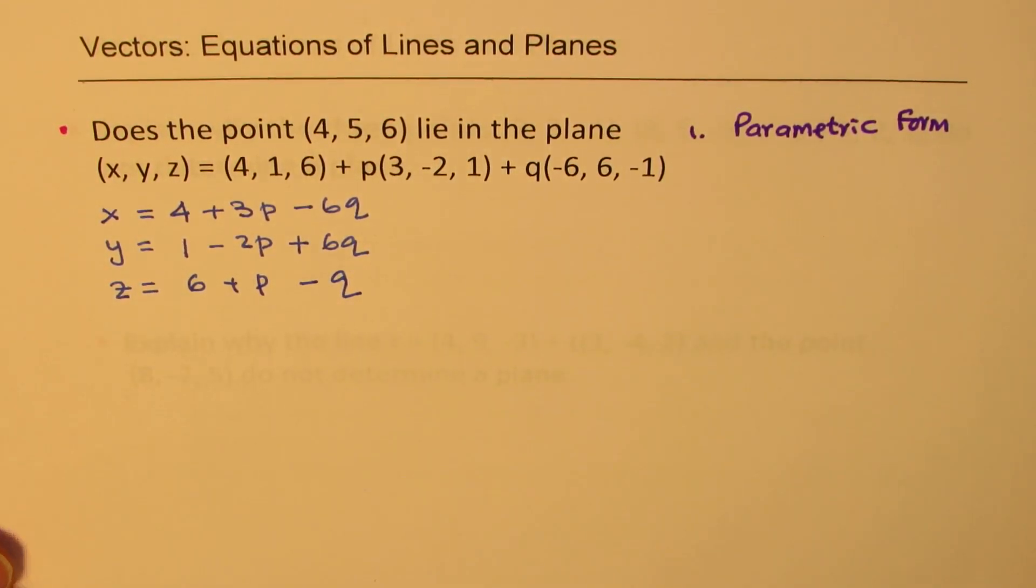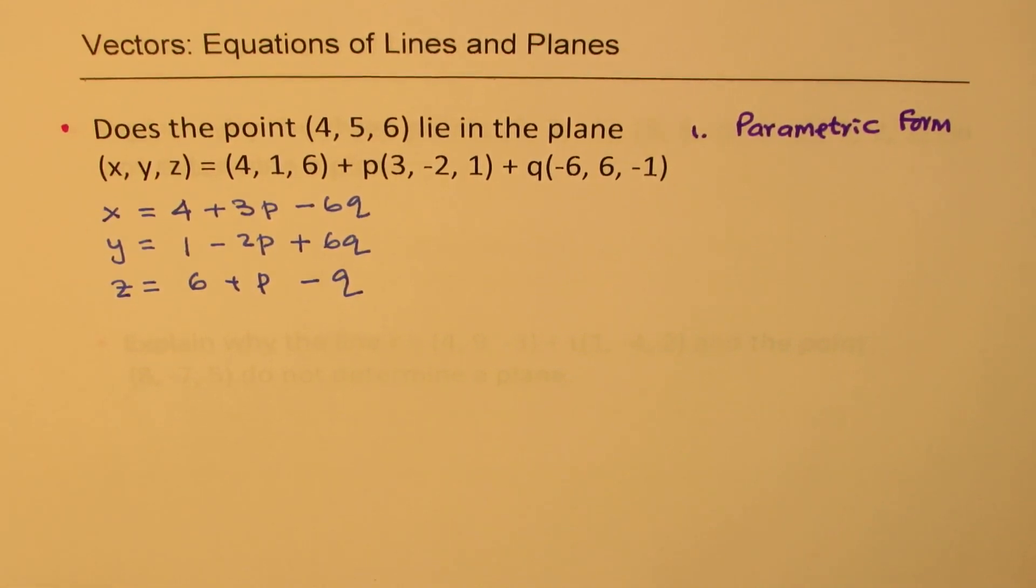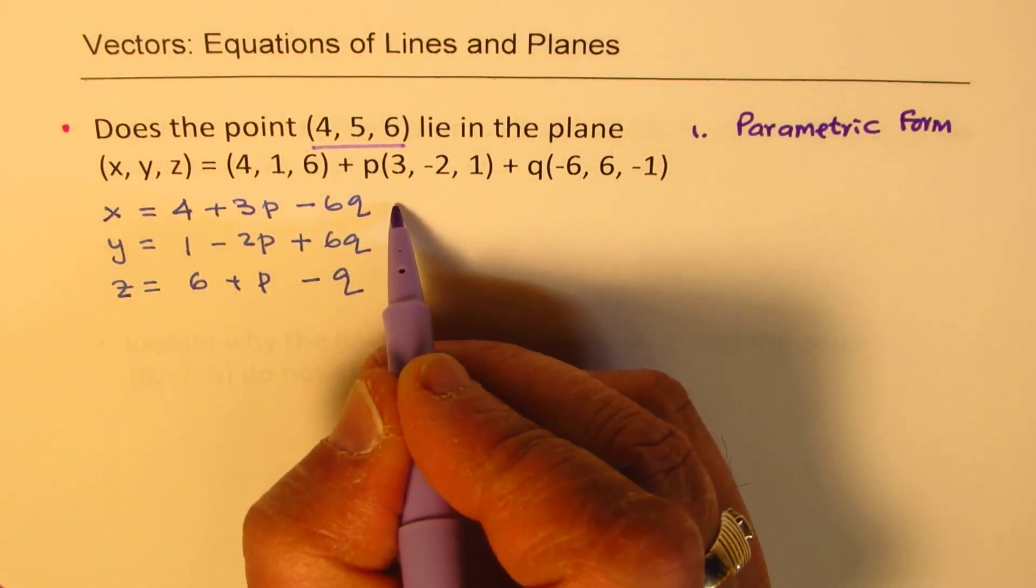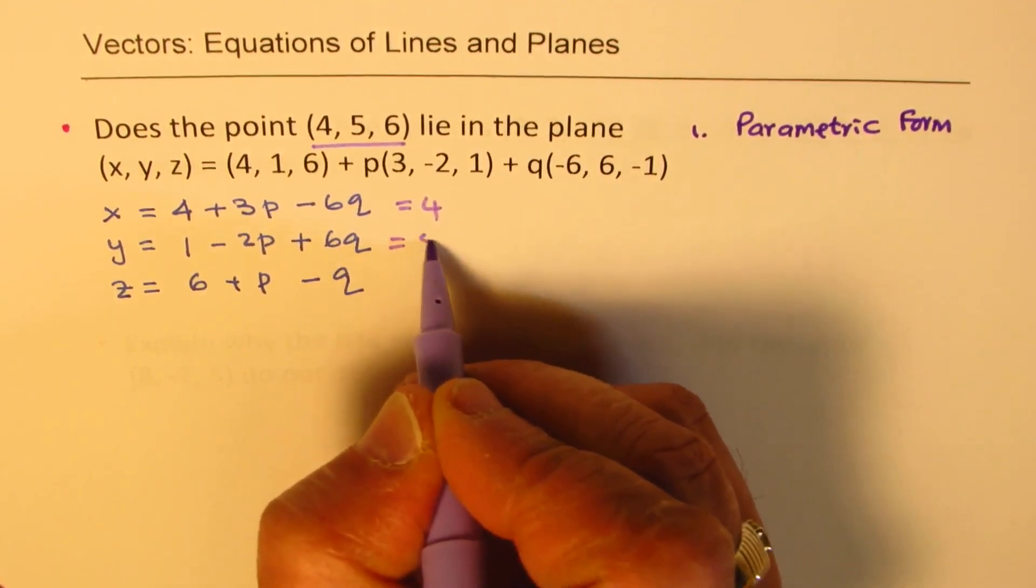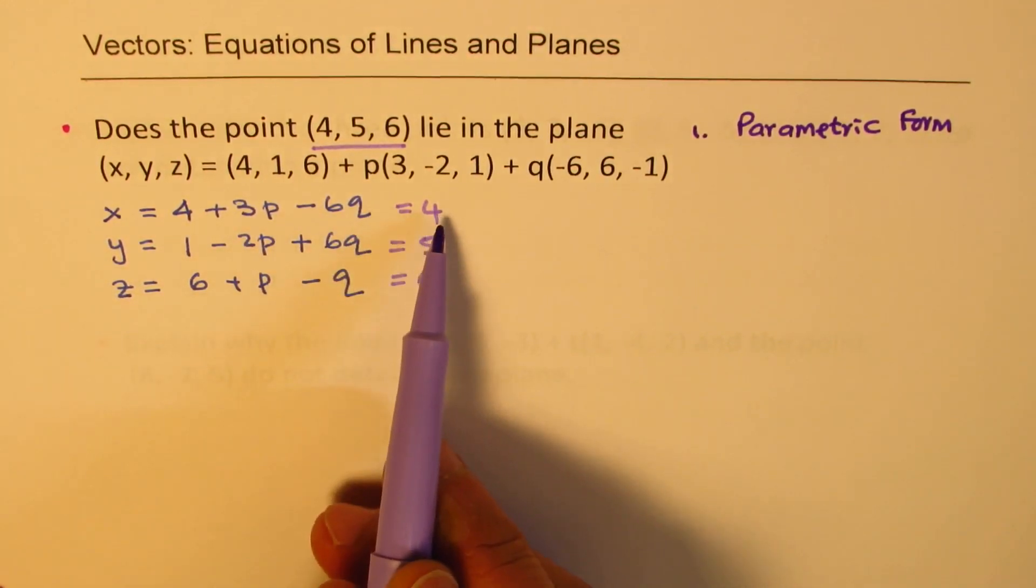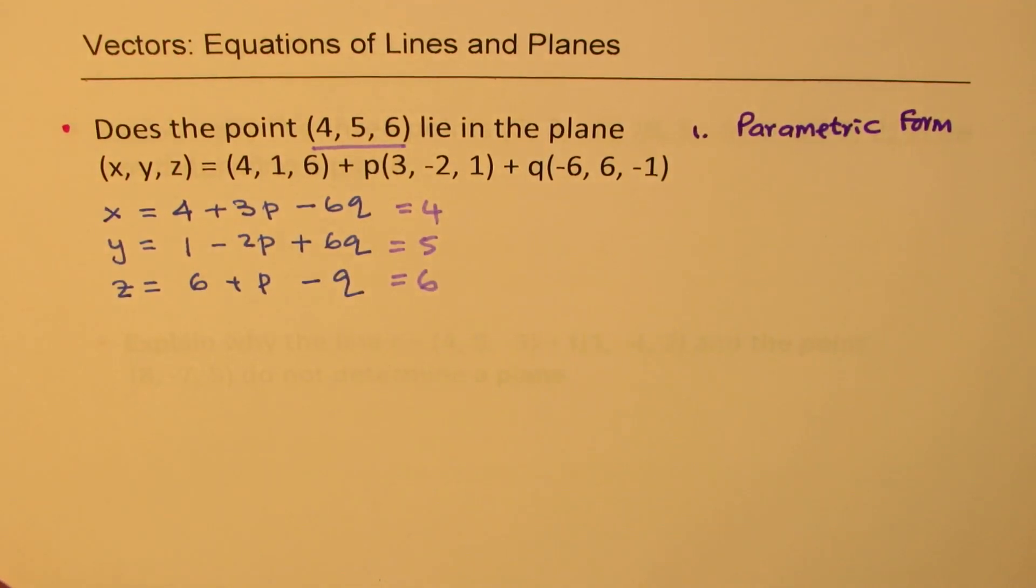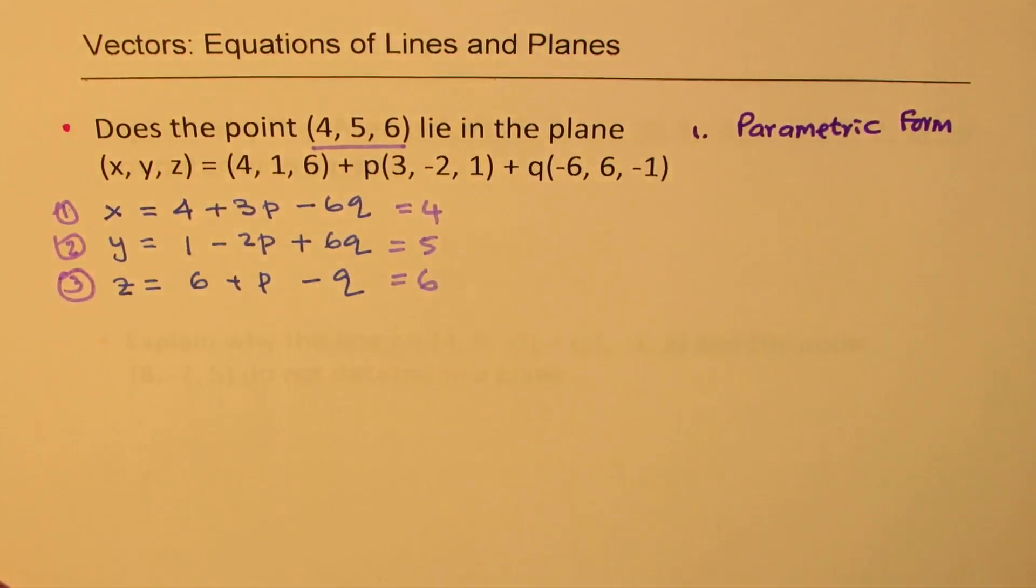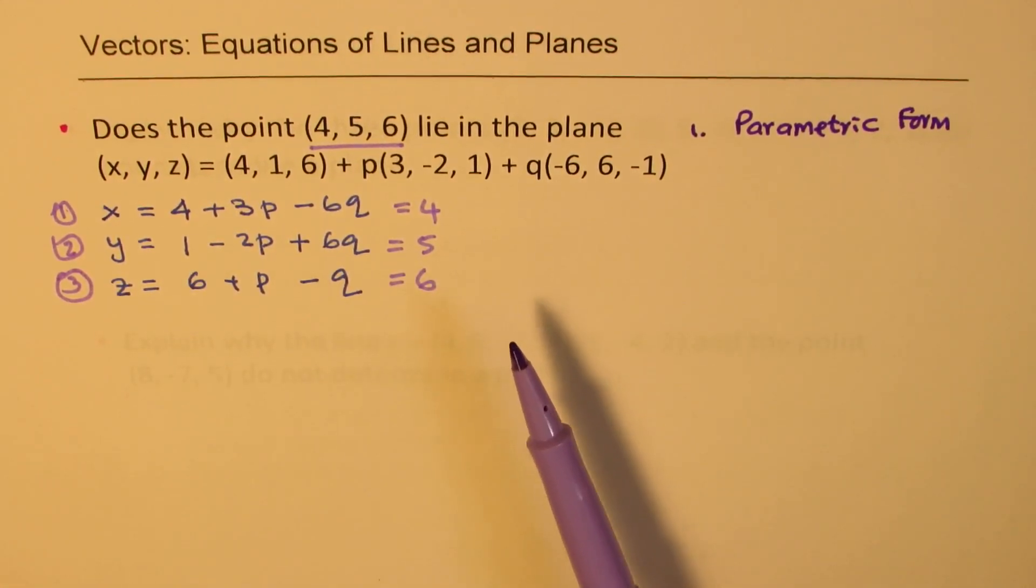Now, what are we given? We are given that this point is there and whether this lies on this or not. So the x value is 4. So we'll equate 4 for the first one, 5 for the second one, and 6 for the third one. So we actually get the equation 4 + 3p - 6q equals to 4, and like this. We have three equations now. So we'll call them as our equation number one, two, and three.